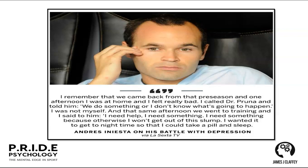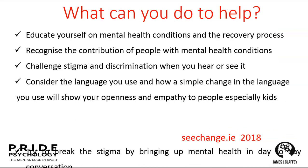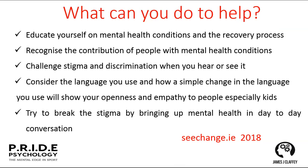We have this belief and bias towards thinking that elite athletes are impervious to mental health issues. The reality with Stephen, Jennifer, and Andrei is that there's a strong correlation between elite sport and depression. What can you do to help? Educate yourself on mental health conditions and the recovery process. Recognise the contribution of people with mental health conditions. Challenge the stigma and discrimination when you hear or see it. Consider the language you use — a simple change will show your openness and empathy, especially to kids. Try to break the stigma by bringing up mental health in day-to-day conversations.